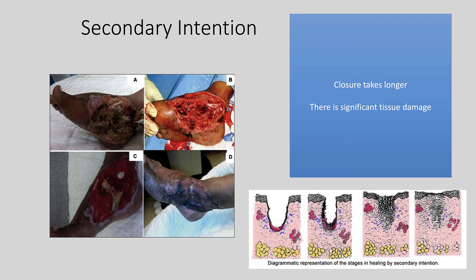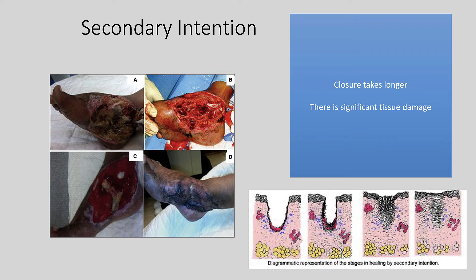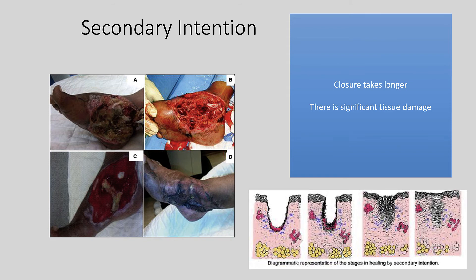Secondary intention usually occurs when there is significant tissue loss in both the dermal and subcutaneous layers. Closure takes much longer, requiring more intensive cellular work to bridge the gap — longer phases of granulation, re-epithelialization, and contraction. You see this with pressure wounds, traumatic wounds, and wounds where edges cannot be approximated. Healing occurs almost from the inside out, with epithelialization and granulation progressing from the wound bed outward. There is a large risk of infection since granulation tissue can be exposed for weeks to months, so keeping wound beds clean is critical.